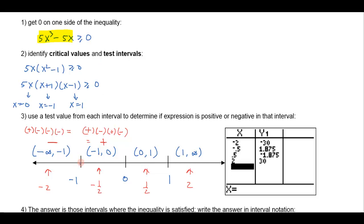The critical points are where the expression equals zero — those are part of the solution. Now for the interval containing one-half: I get 5 (positive), times one-half (positive), times one-half plus 1 equals three-halves (positive), times one-half minus 1 equals negative one-half (negative). Three positives and one negative give something negative. For the interval containing 2: 5 is positive, 2 is positive, 2 plus 1 is 3 (positive), and 2 minus 1 is 1 (positive). Four positives give something positive.